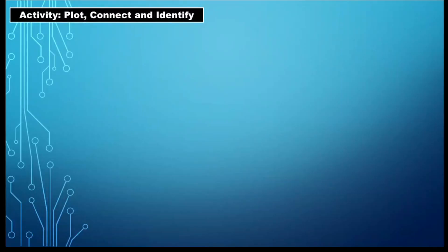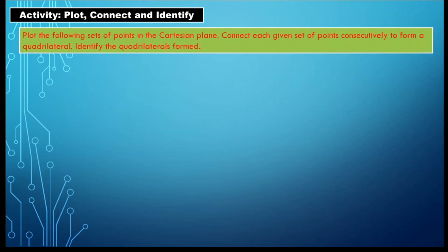At this point, we are ready to answer the activity: Plot, Connect, and Identify. Plot the following sets of points in the Cartesian plane, connect each given set of points consecutively to form a quadrilateral, then identify the quadrilateral formed. Let's start with number one.